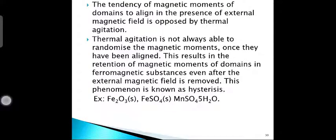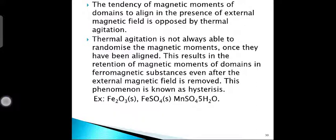The tendency of magnetic moments to align in the presence of external magnetic field is opposed by thermal agitation. Thermal agitation is not always able to randomize the magnetic moments once they have been aligned. This results in the retention of magnetic moments of domains in ferromagnetic substances even after the external magnetic field is removed — and that is called Hysteresis. Examples include ferric oxide, ferrous sulphate, and manganese sulphate.